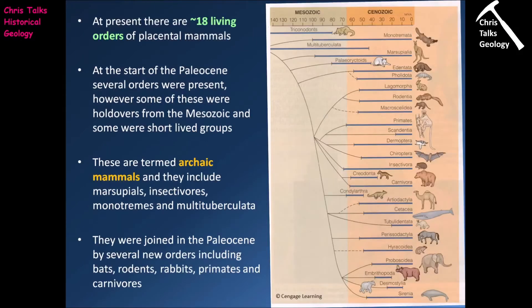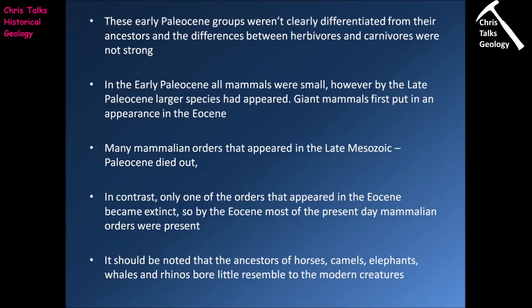At present there are approximately 18 living orders of placental mammals. At the start of the Paleocene — the start of the Cenozoic — several orders were present, though some were holdovers from the Mesozoic and some were relatively short-lived groups. These placental mammals from the Mesozoic that continued into the Cenozoic are termed the archaic mammals, including marsupials, insectivores, monotremes and the multituberculata. They were then joined in the Paleocene by new orders including bats, rodents, rabbits, primates and carnivores. These early Paleocene groups were not clearly differentiated from their ancestors, and the distinction between herbivores and carnivores wasn't particularly strong, reflecting the early stages of mammalian divergence.